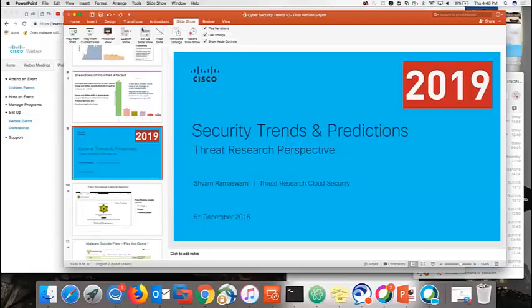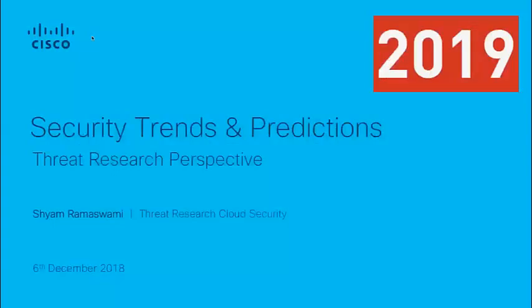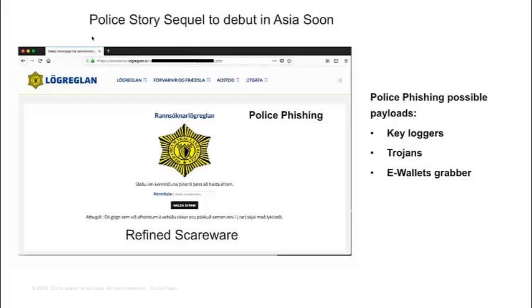We're going to speak about the trends and predictions we've frequently seen so far in the security research community, with customers, and with the wider internet audience. I've handpicked quite a few that could be big problems in 2019 and how we handle them at Umbrella and Cisco.